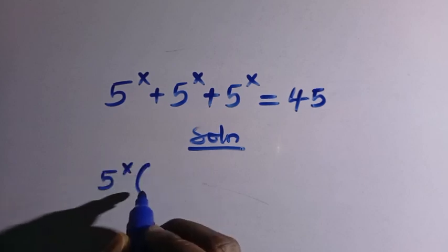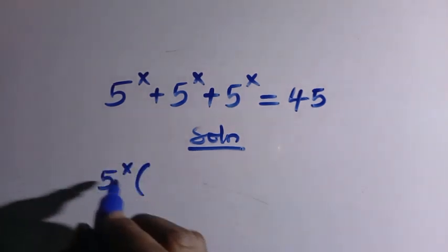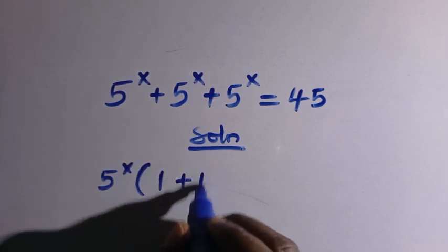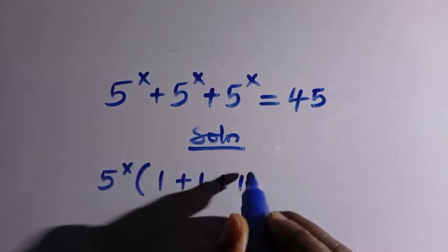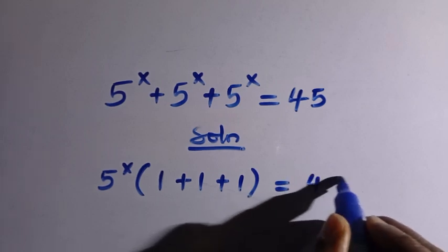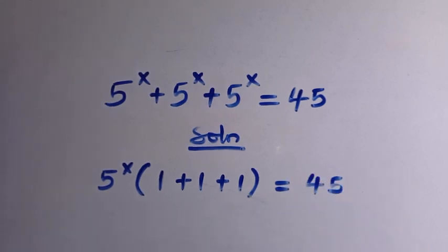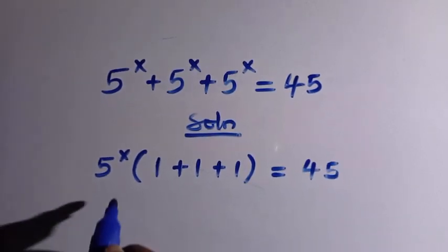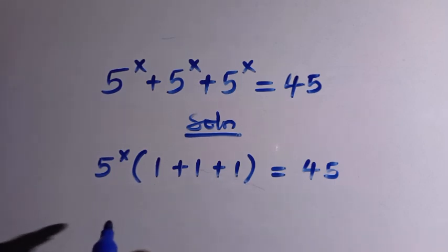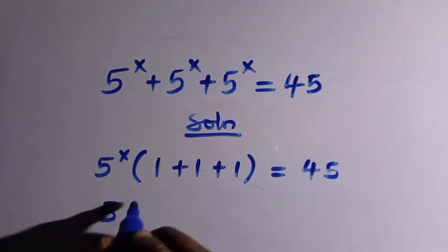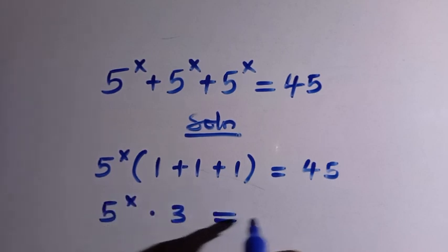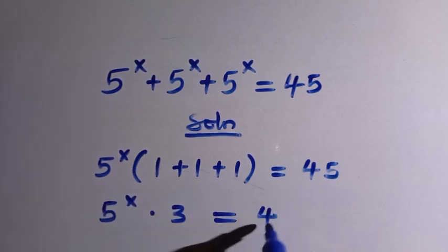So by factoring it out, for the first one we divide it by 5 power x and we have 1 plus 1 plus 1 equals 45. So here is the general method. By adding 1 plus 1 plus 1 together we get 3. So we have 5 power x multiplied by 3 equals 45.